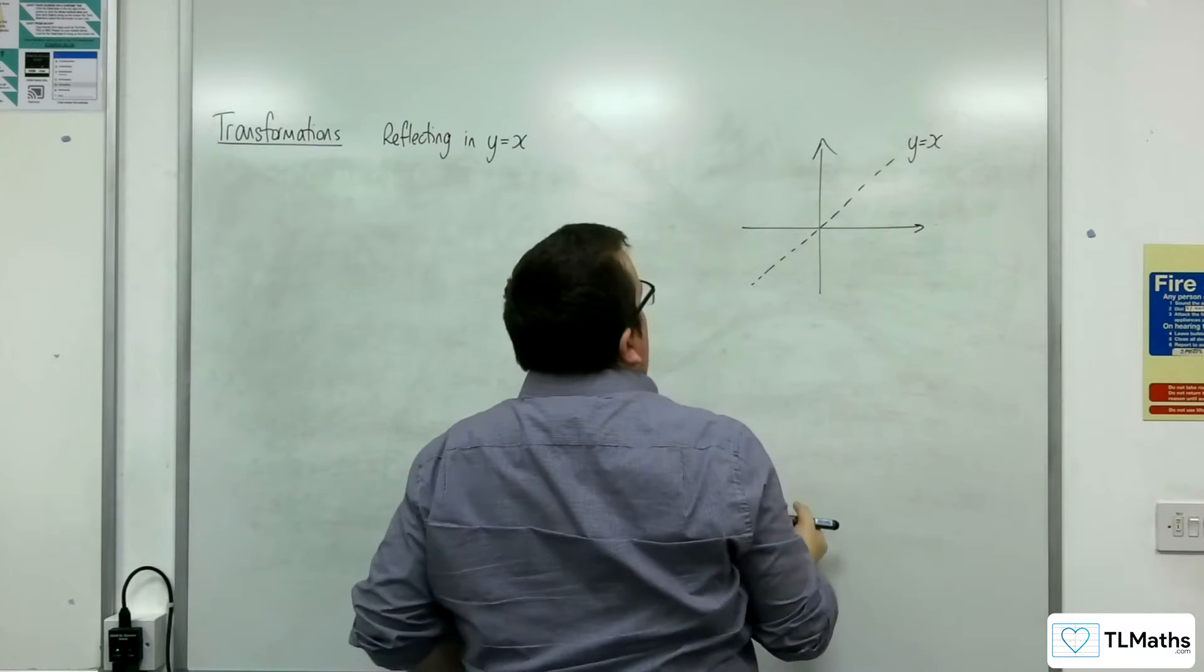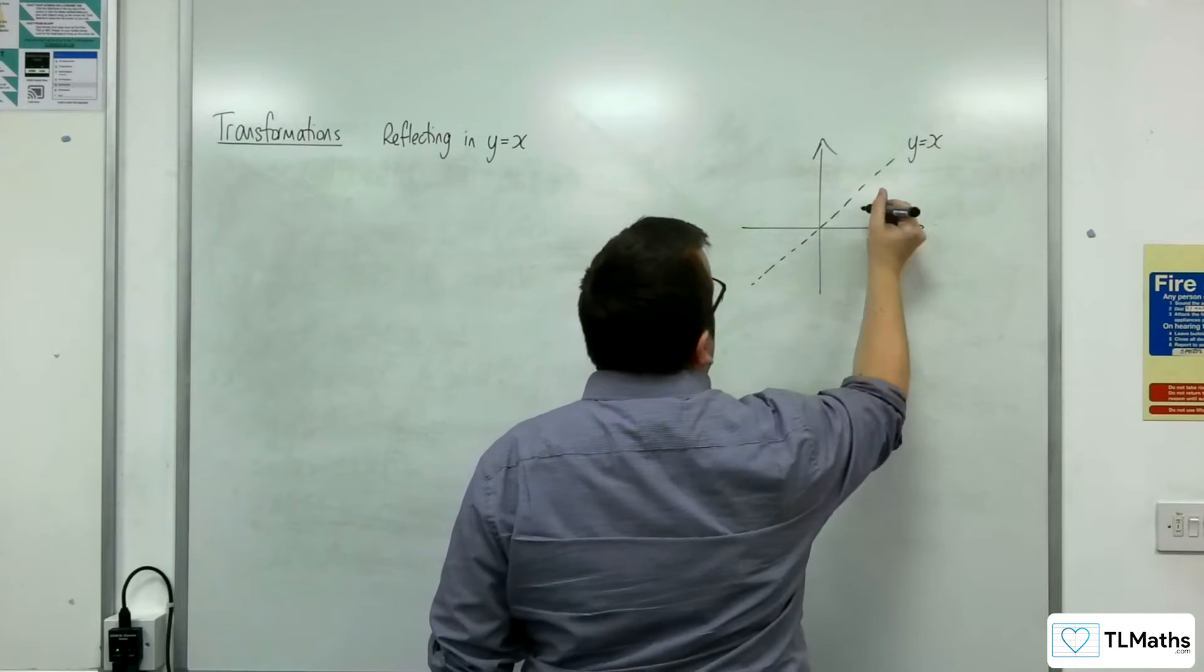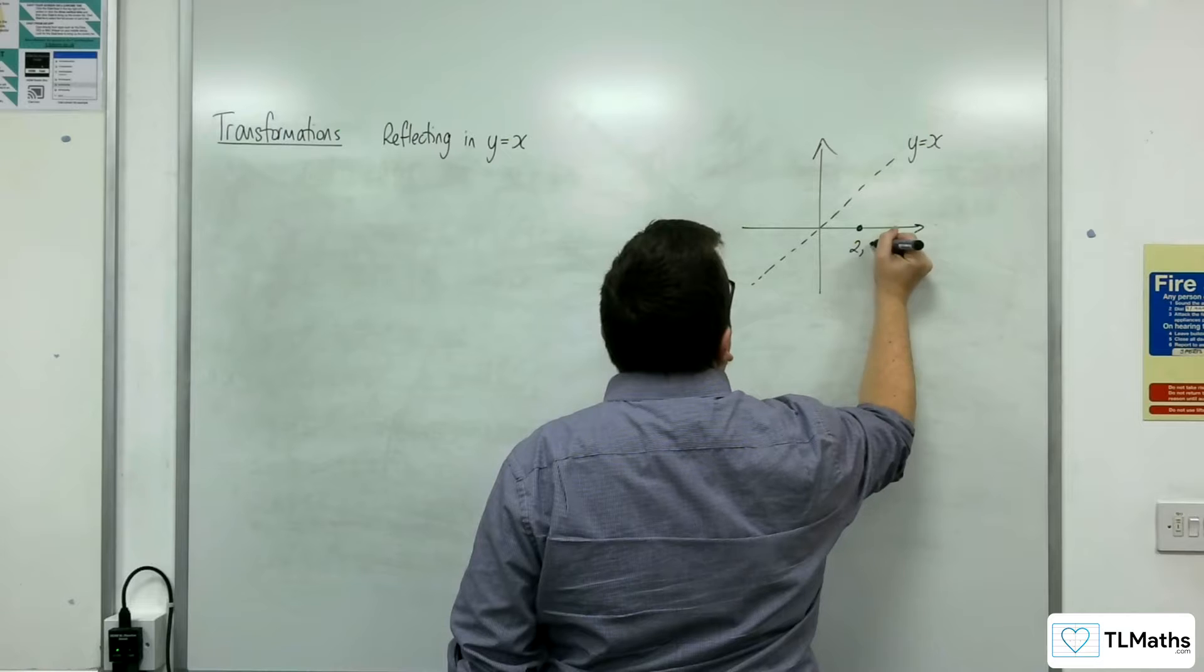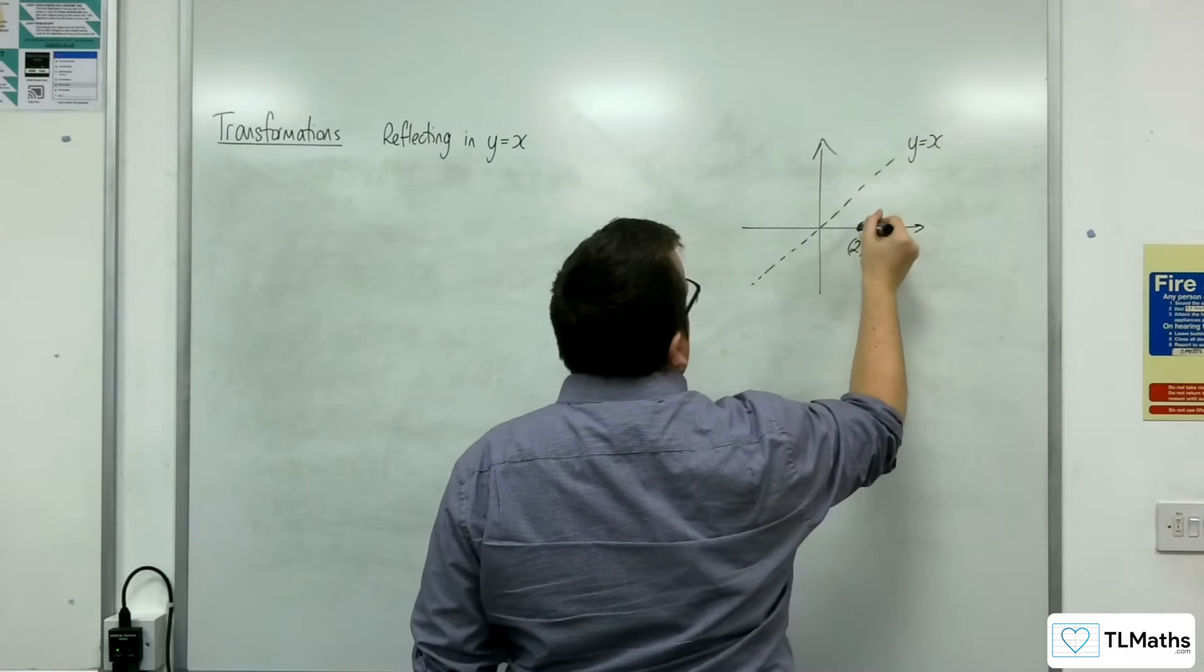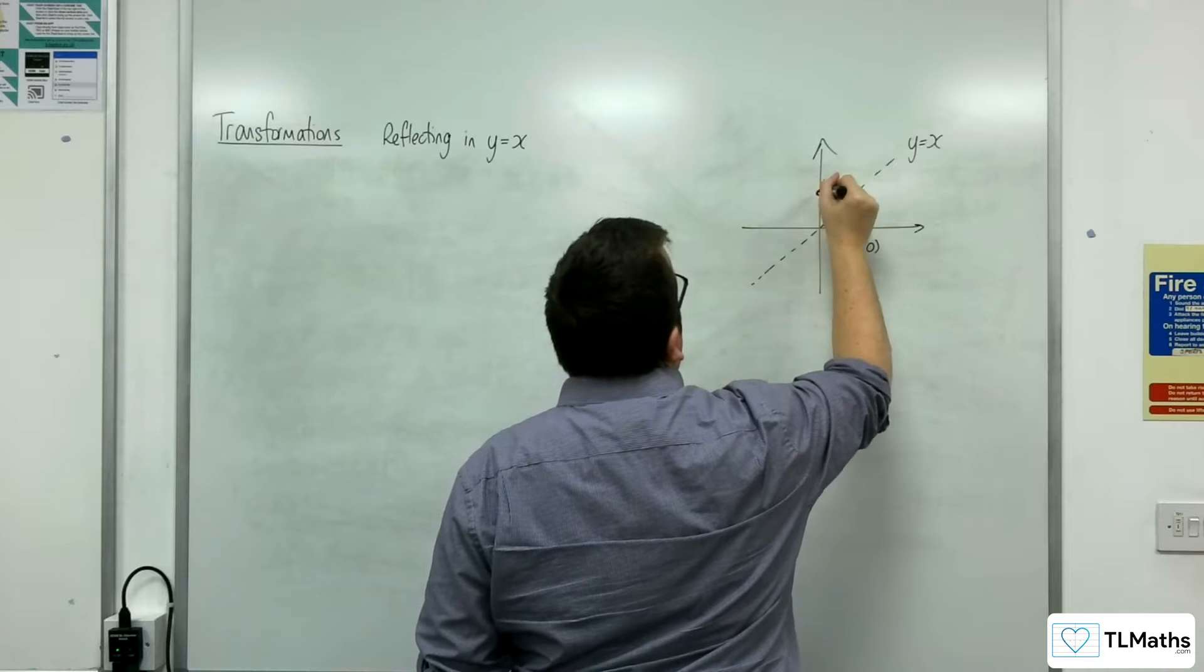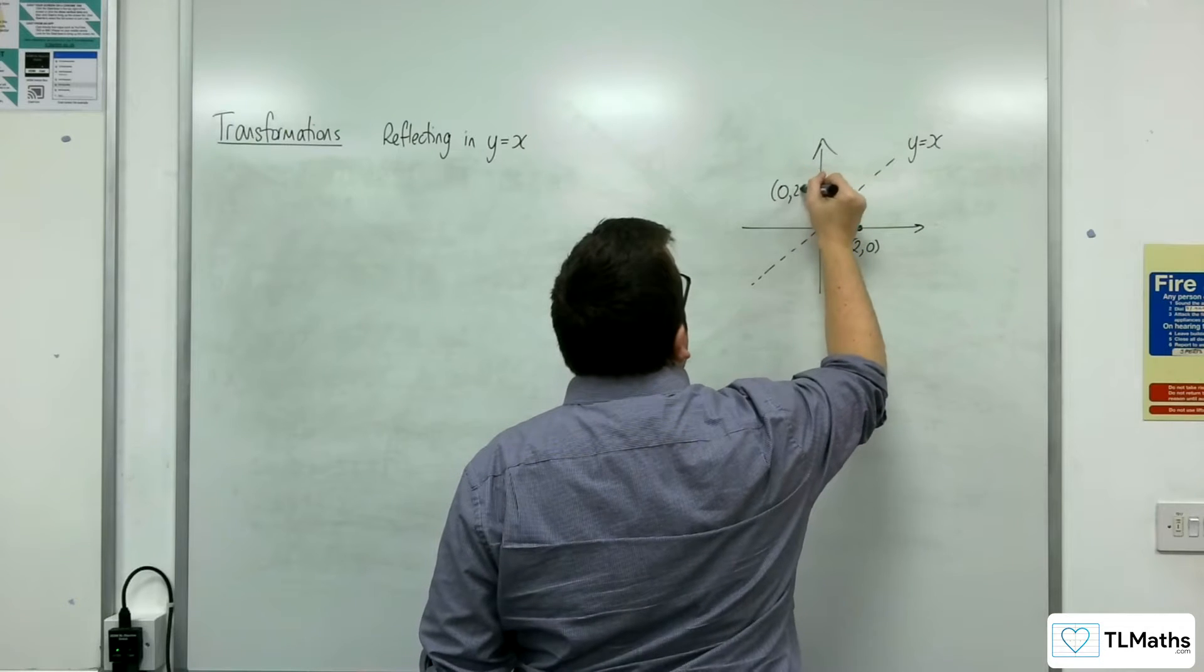The idea is that if you take any coordinate, let's say this point here which has the coordinate (2, 0), if it was to be reflected in y equals x, it would appear up here which is the point (0, 2).